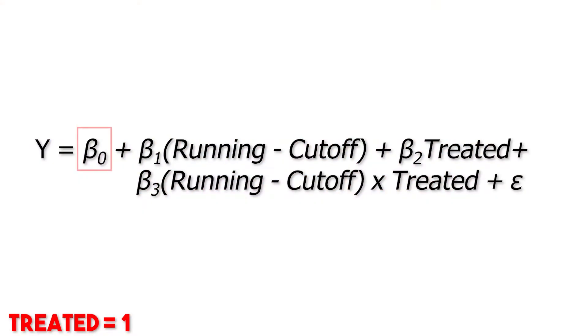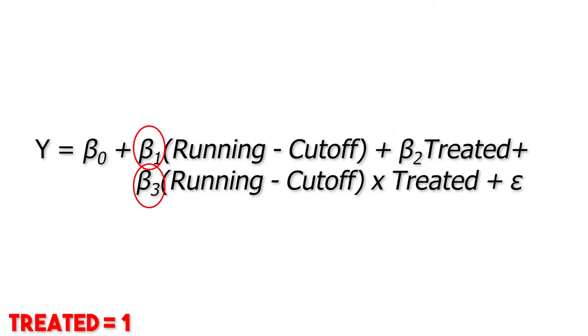If we set treated equal to zero, so you're on the untreated side of the cutoff, we have an intercept of beta zero and a slope on the running variable of beta one. If we set treated equal to one, we have an intercept of beta zero plus beta two, and a slope on the running variable of beta one plus beta three. That brings us to why we use the running variable minus the cutoff rather than the running variable itself.